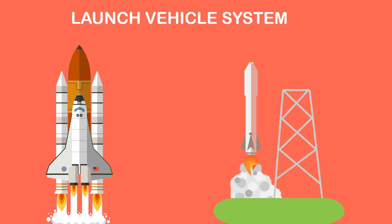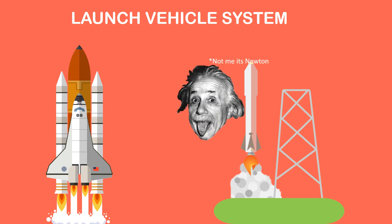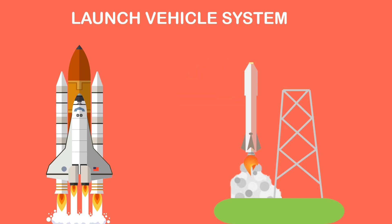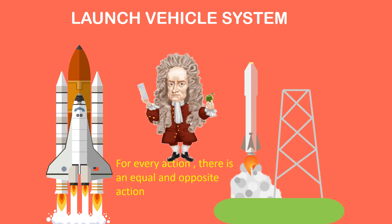A launch vehicle or carrier rocket is a rocket used to carry a payload away from earth's surface. Launch vehicles typically have two or more stages. The principle behind this is Newton's third law, that is action and reaction, which push rockets forward simply by expelling their exhaust in the opposite direction at high speeds.